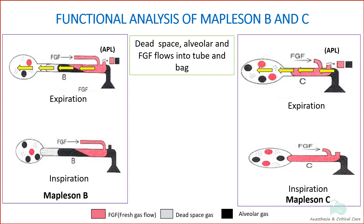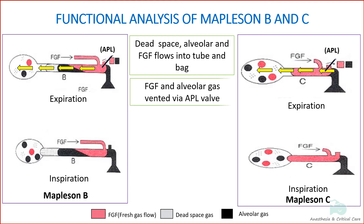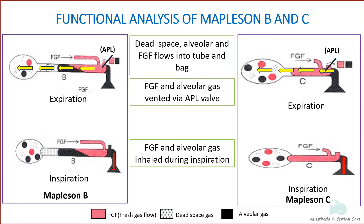The tubing near the patient end contains FGF and some alveolar gas containing carbon dioxide. As the APL valve is at the patient end, a mixture of alveolar and fresh gas passes out via the APL valve with the increase in pressure inside the system. Then, during inspiration, a mixture of fresh gas and retained alveolar gas is breathed in.